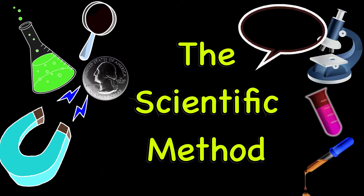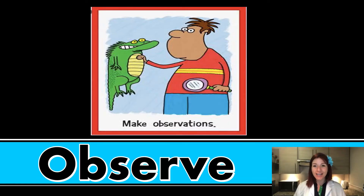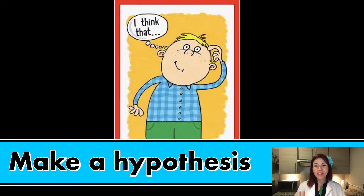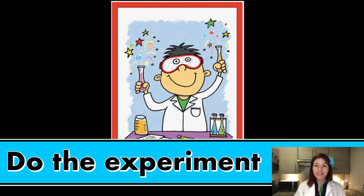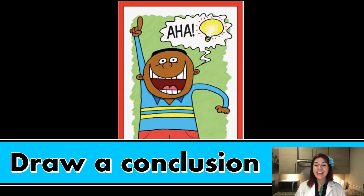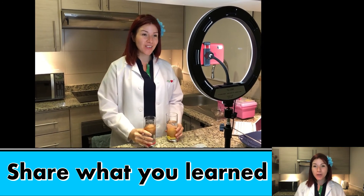Now you know one of the main ways scientists discover things by using the scientific method. Remember, the seven steps of the scientific method are: number one, observe; number two, ask a question; number three, make a hypothesis or a prediction; number four, do an experiment; number five, collect the data; number six, draw a conclusion; and number seven, share what you learned.